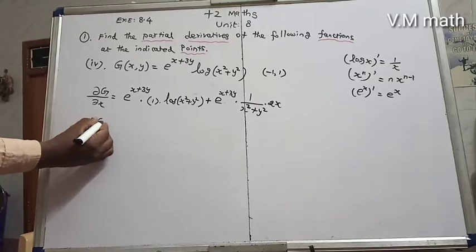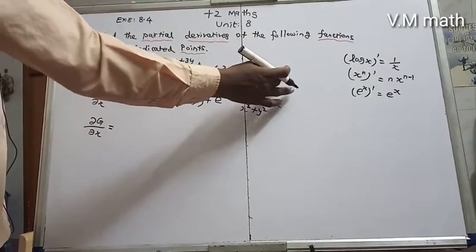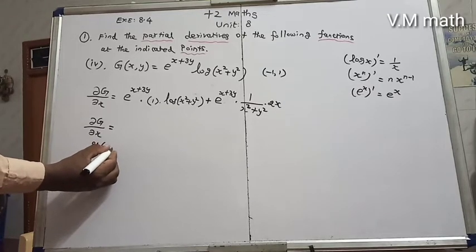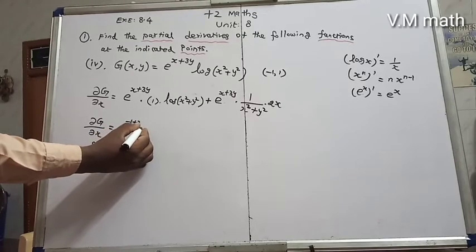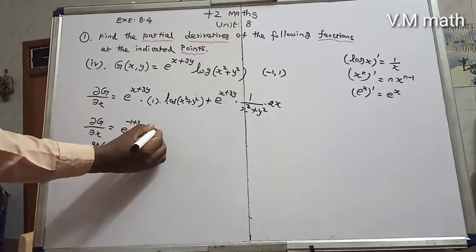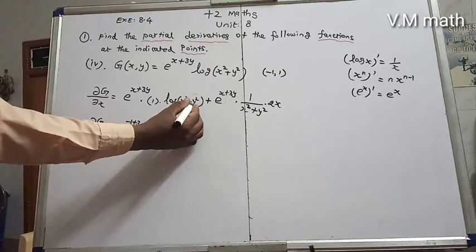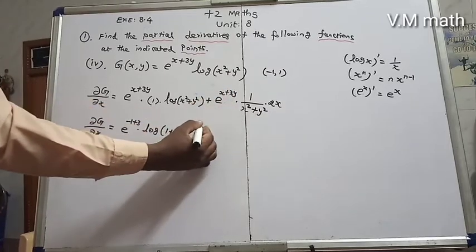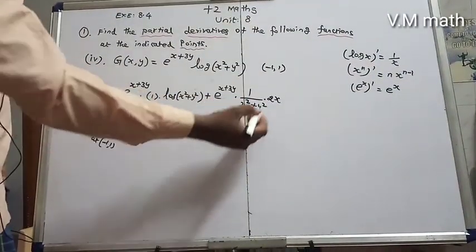So dg/dx equals e^(x+3y) times log(x² + y²) plus e^(x+3y) times 2x/(x² + y²). Now substituting the point (-1, 1): x = -1, y = 1. So we get e^(-1 + 3×1) times log((-1)² + 1²), plus e^(-1+3) times 1/(x²+y²) times 2x.